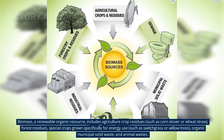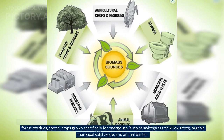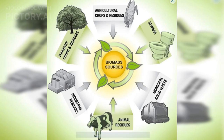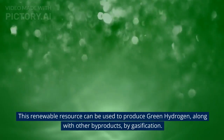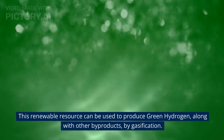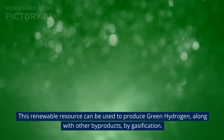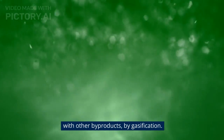Biomass, a renewable organic resource, includes agriculture crop residues such as corn stover or wheat straw, forest residues, special crops grown specifically for energy use such as switchgrass or willow trees, organic municipal solid waste, and animal wastes. This renewable resource can be used to produce green hydrogen, along with other byproducts, by gasification.